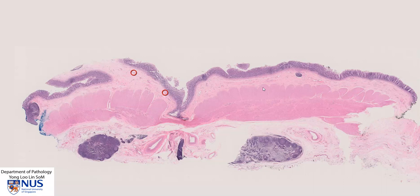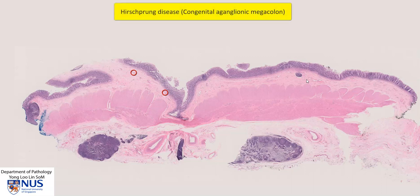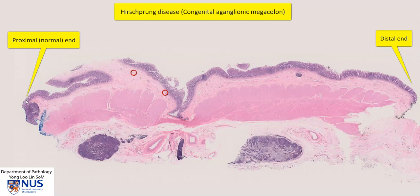Hello, this is a virtual microscopic slide of a length of colon, and this is a case of Hirschsprung disease. On the right is the distal end, and on the left is the proximal end. The distal segment is abnormal and lacks the presence of ganglion cells, while the proximal half is normal, with the presence of normal ganglion cells in the submucosal as well as the myenteric nerve plexuses.